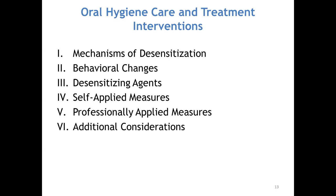There are professionally applied measures — every office will have their couple of go-to products that work for them. Part of the consideration is whether it's easily applied; some require a curing light and isolation, which takes more time, so we're looking for something that can be easily done chairside. For additional considerations, if nothing else works: I've seen patients get crowns because the tooth was so sensitive and that just covered everything up. There are outliers who also need root canals because nothing else has worked, depending on the degree of sensitivity.